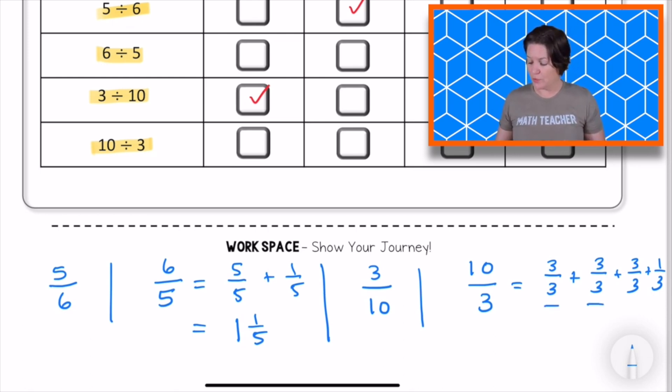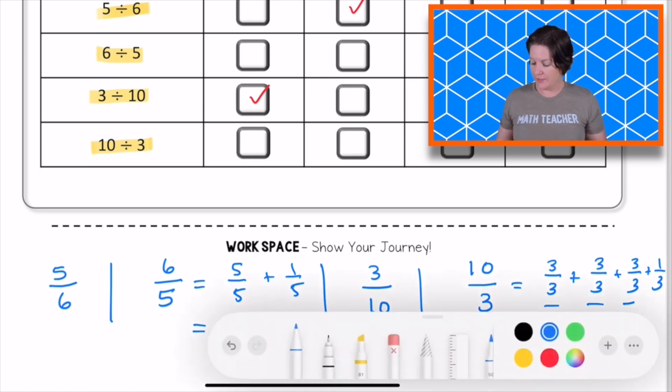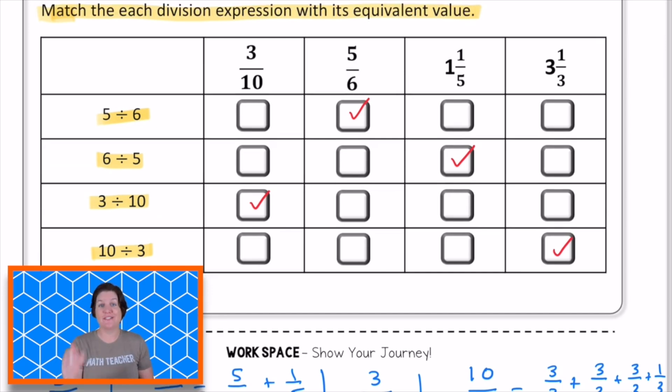that would be 1, 2, 3 wholes, and 1 third. So mark that one. And that is how it is done.